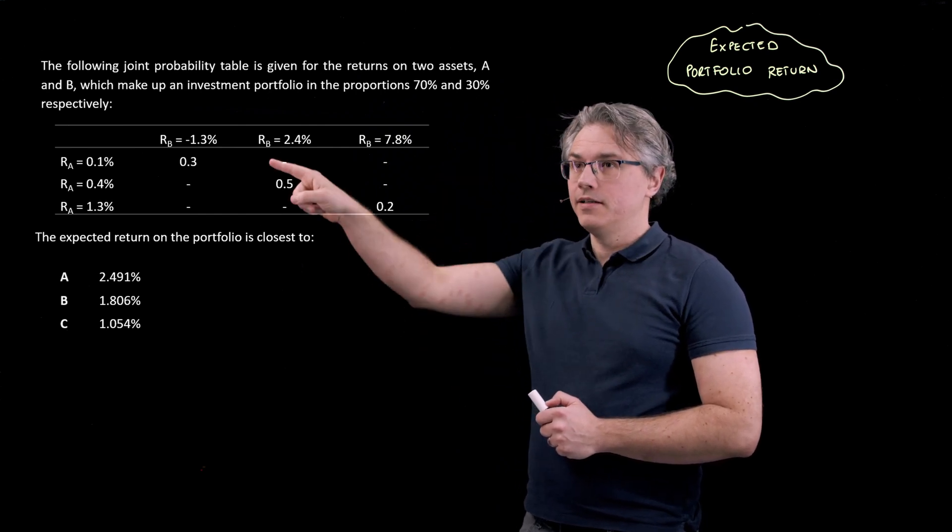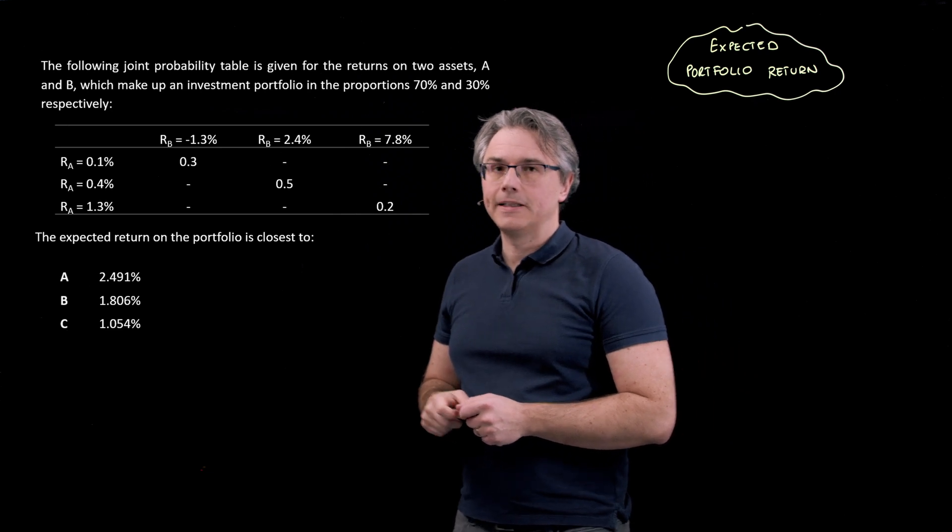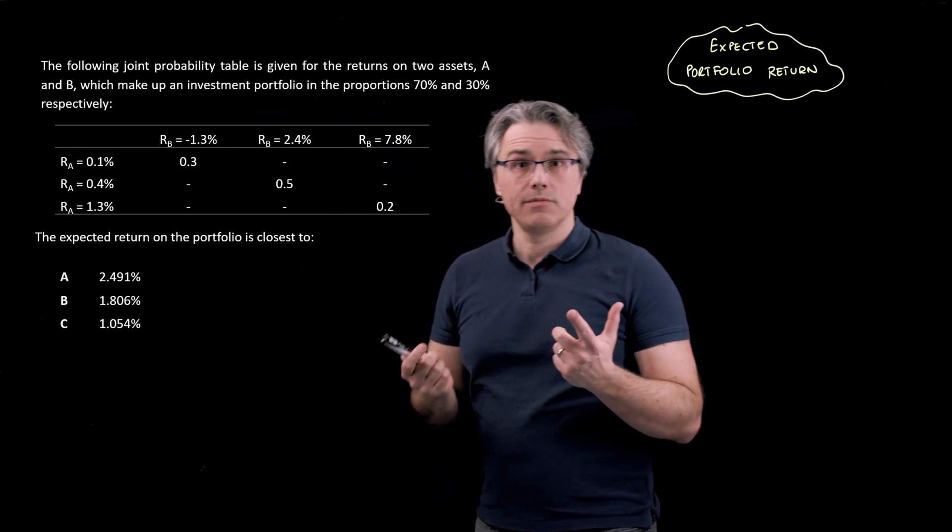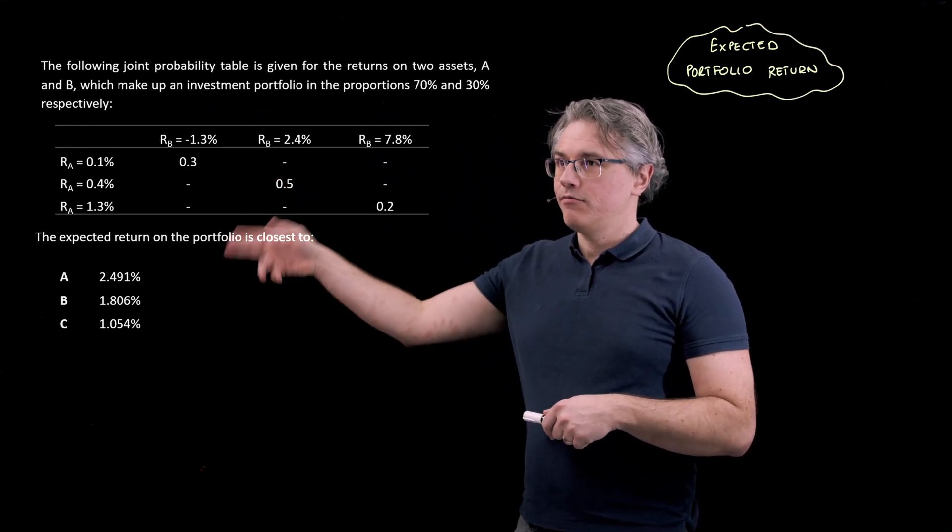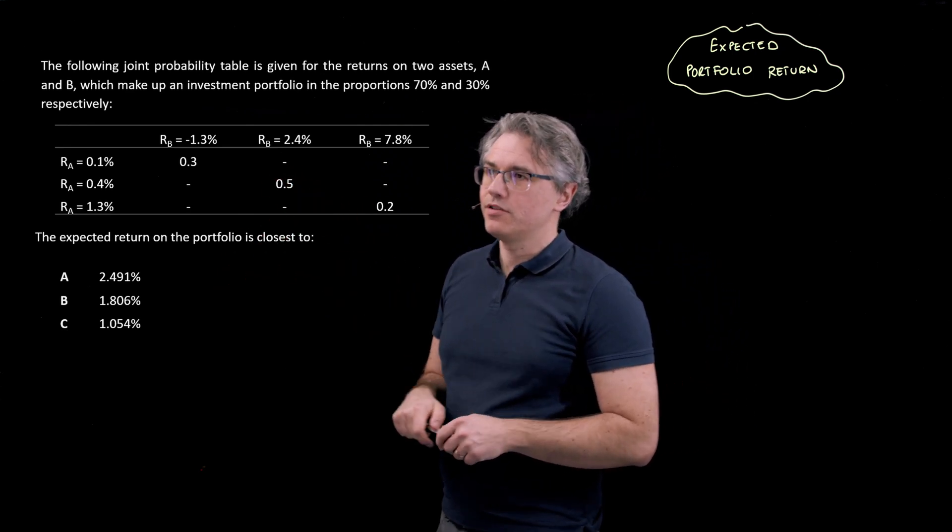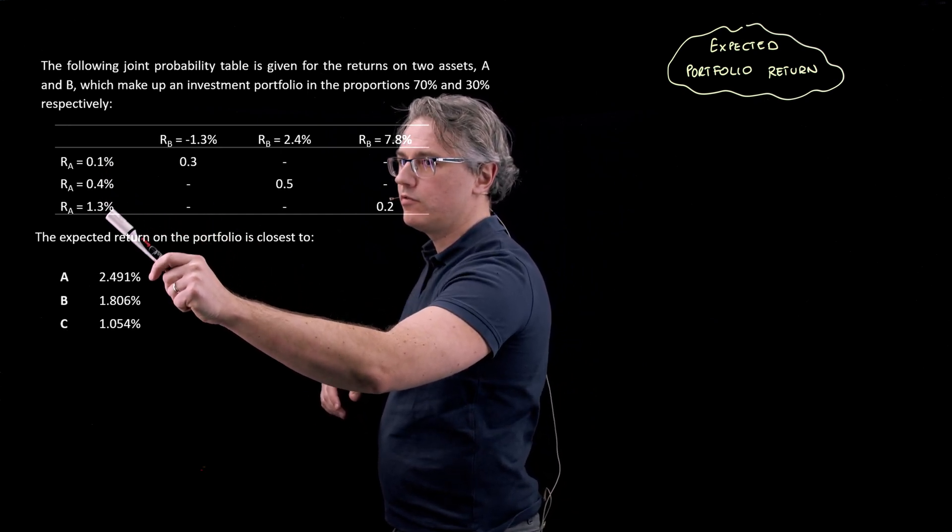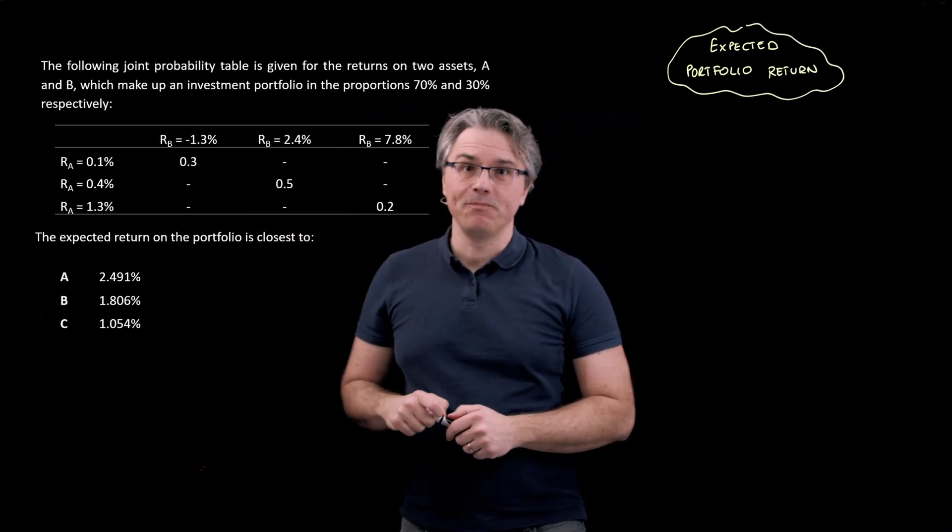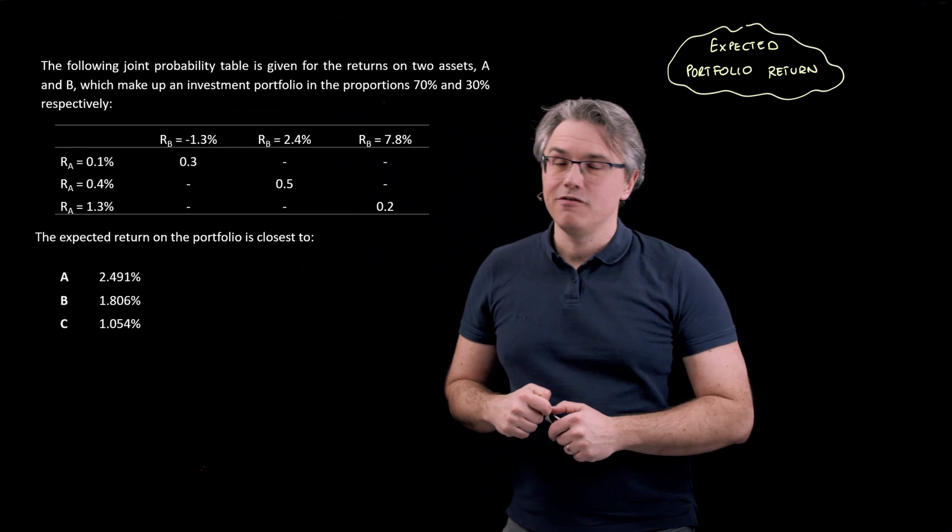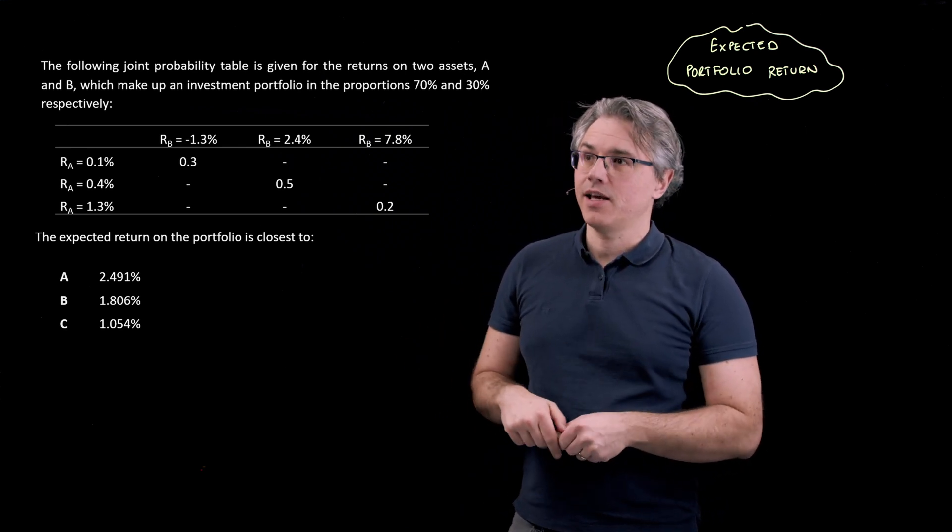And in the rows, you've got the returns achieved by asset A. And when I say returns, I mean the 0.1, 0.4 or 1.3% return. In the middle of the table, in the actual cells, you've got the probability of each one of those scenarios happening.